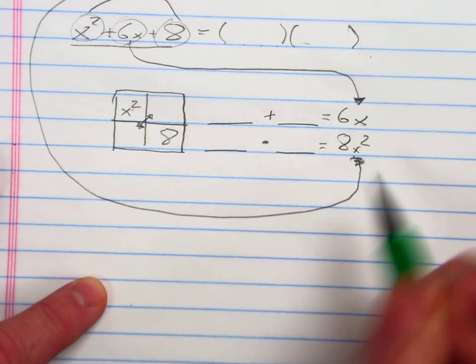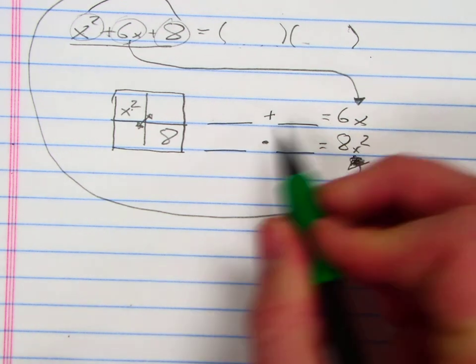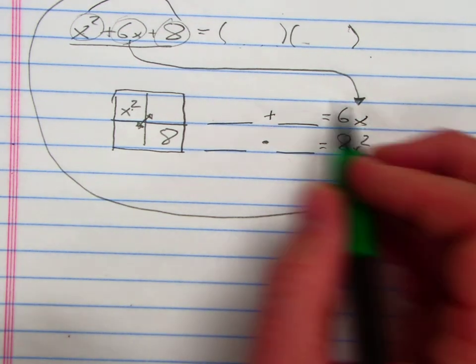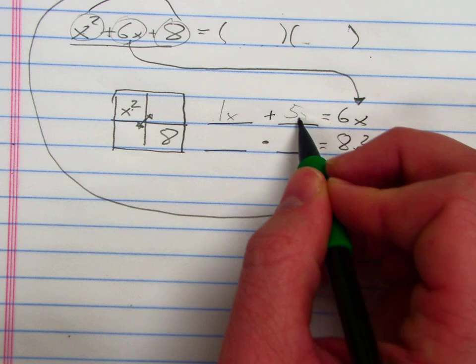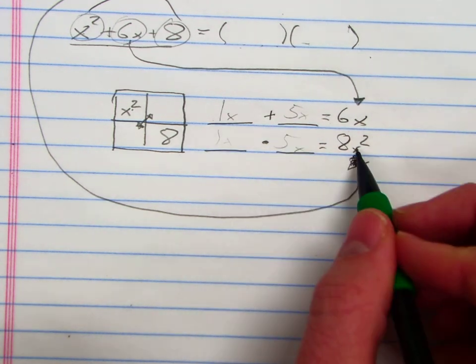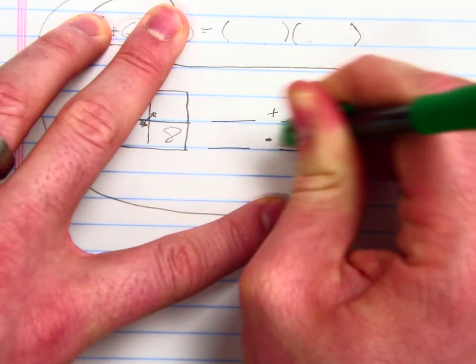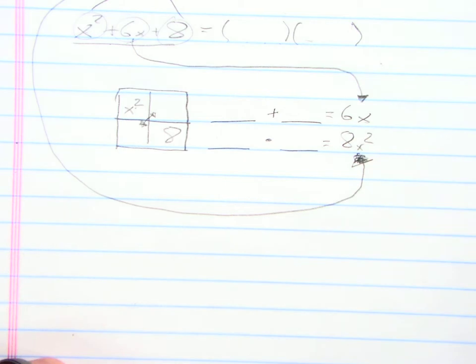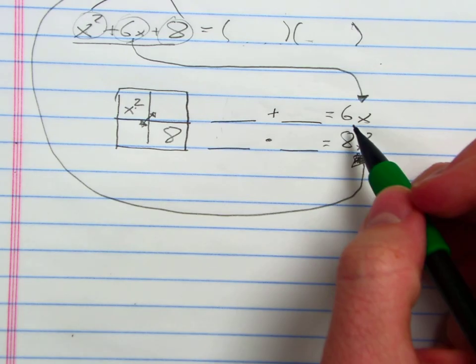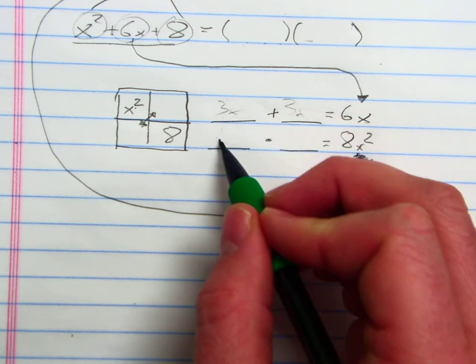Well, let's think. What can I add to make 6x? I could do 1x plus 5x to get 6x, but do 1x times 5x give me 8x squared? No, so that's not going to work. I could do 3x plus 3x equals 6x, but 3x times 3x is not 8x squared. So it's not 3x and 3x.